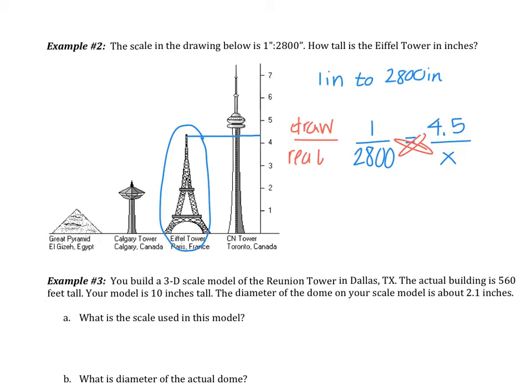Then when you cross multiply, you get x to be 12,600 inches. So that is how tall the Eiffel Tower is in inches in real life. Obviously, the picture would not be able to be shown for 12,600 inches. That's why we use this scale.